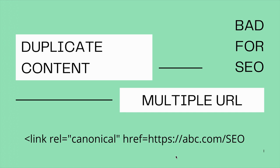Now we'll look at how to use the HTML canonical URL code. This method lets you pick one of the multiple pages for search engines to index. The HTML code looks like a link tag, and you insert the URL of the page you want search engines to index among your multiple duplicate pages.